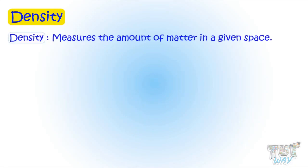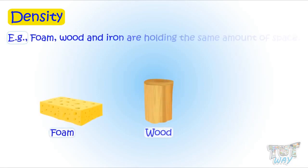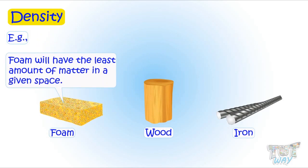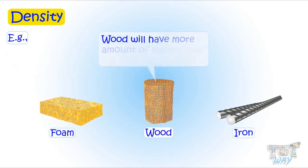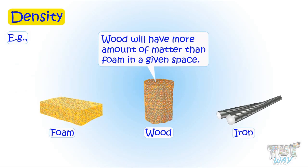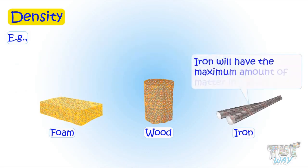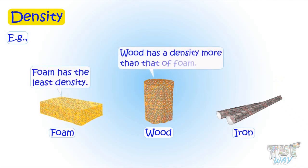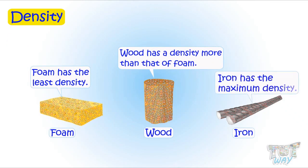Now let's learn another property, and it is density. Density measures the amount of matter in a given space. Here is an example. Foam, wood, and iron are holding the same amount of space. But foam will have the least amount of matter in given space. Wood will have more amount of matter than foam. And iron will have the maximum amount of matter in given space. So we say, foam has least density, wood has density more than that of foam. And iron has the maximum density out of the three types of matter.